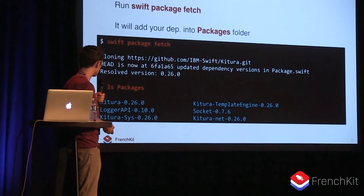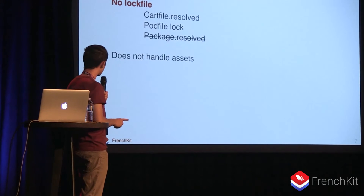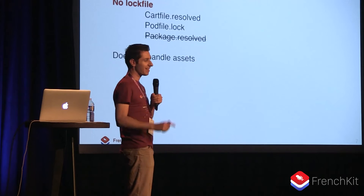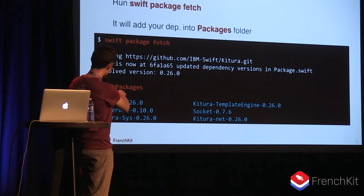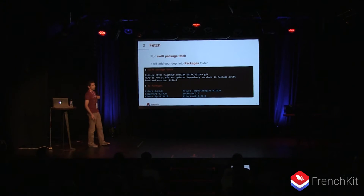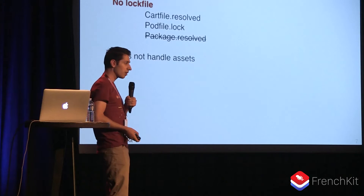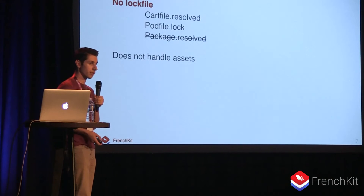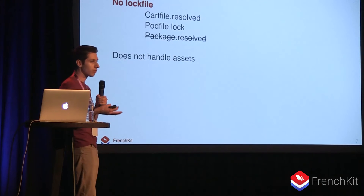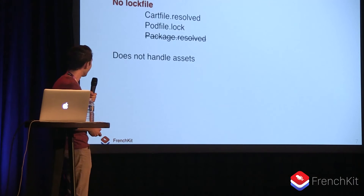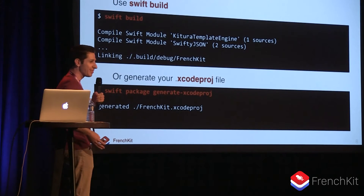You have your dependencies downloaded, but there is one problem with SPM: there is no lock file. All dependencies are named with their name and version number, so if you want to make sure every team member has the same version of dependencies, you'll have to version the Packages folder. Right now there's no lock file with all the versions written inside. Also, you can only get source code from SPM because right now it doesn't handle assets — but who does storyboards, so it's not really a concern anyway.